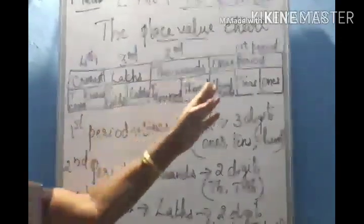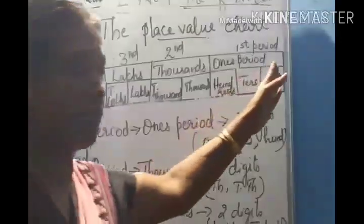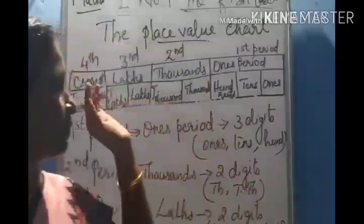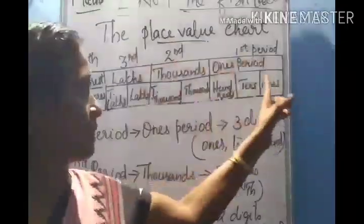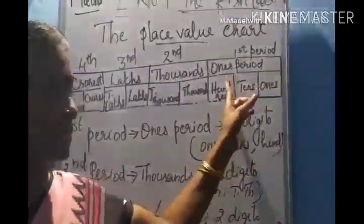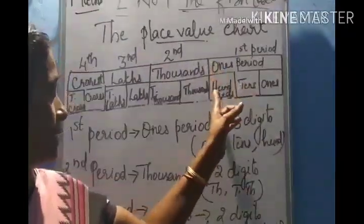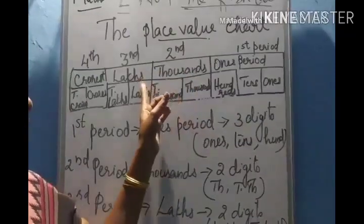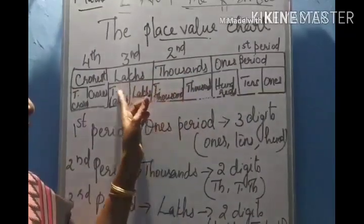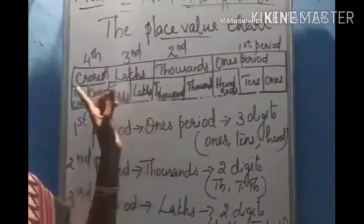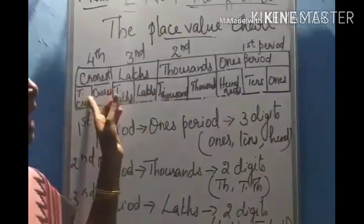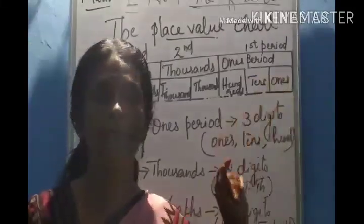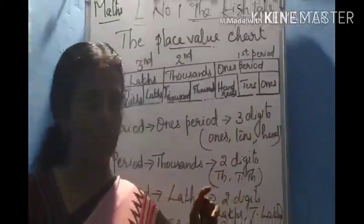So remember, it starts from right to left: ones, tens, hundreds, thousands, ten thousands, lakhs, ten lakhs, crores, and ten crores are the various places in the place value chart.